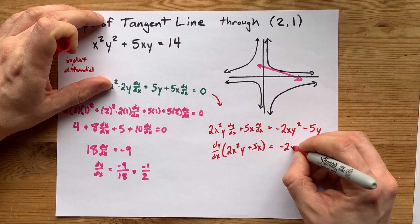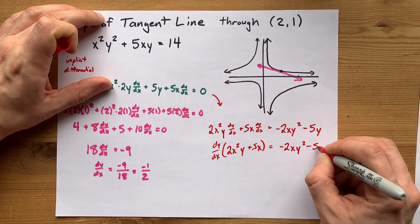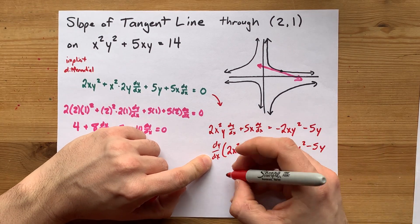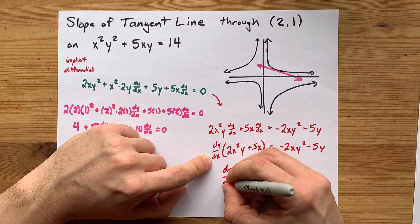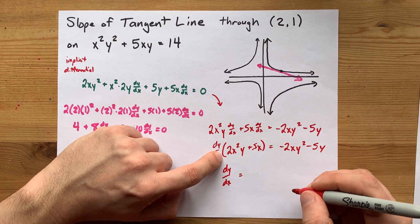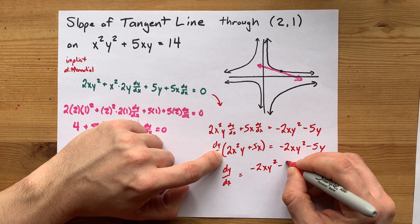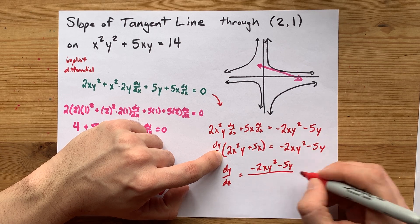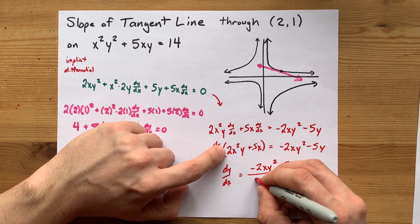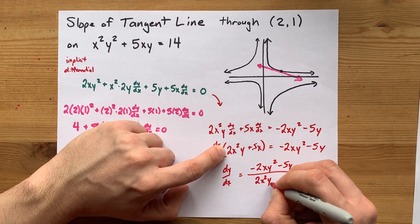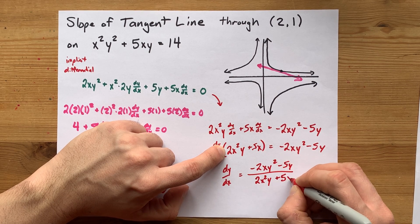You might see where this is going already. In order to isolate dy by dx here, you can just divide both sides by whatever it was multiplied by here. Negative 2xy squared minus 5y. And then you divide the whole thing by this. That's 2x squared y plus 5x.